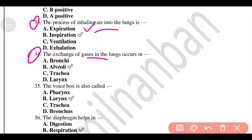The process of inhaling air into the lungs is Option B, Inspiration. The exchange of gases in the lungs occurs in Option B, Alveoli. The voice box is also called Option B, Larynx.